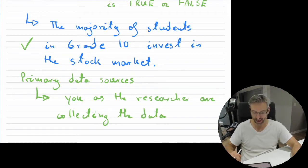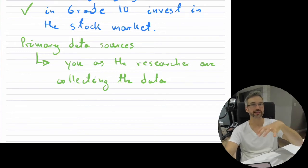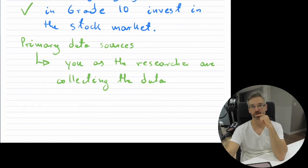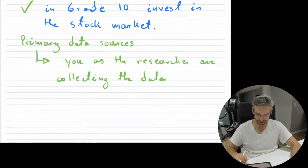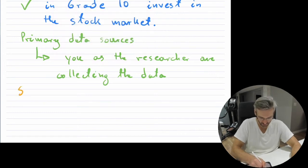Primary means it is you as the researcher collecting the data. Any hypothesis that is made by some researcher who is trying to find out an answer if it's either true or false, if they are the ones who are collecting that data, that is called a primary source of data.